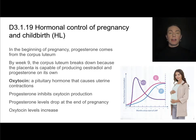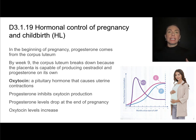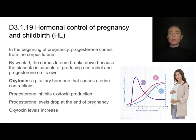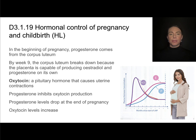In addition to being a site of exchange, the placenta produces hormones. We need the endometrial lining maintained via progesterone. Early in pregnancy, that progesterone comes from the corpus luteum, maintained by HCG produced by the embryo. Once the placenta is developed enough, it produces progesterone along with estrogen (estradiol), which is sufficient to maintain the pregnancy — so HCG levels can drop.